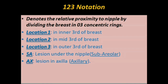The 1-2-3 notation denotes the relative proximity to the nipple by dividing the breast into three concentric rings. Location 1 is the inner third of the breast. Location 2 is the mid third of the breast. Location 3 is the outer third of the breast. Another location called SA refers to the lesion under the nipple or subareolar region. AX stands for the lesion in the axilla or axillary fossa.